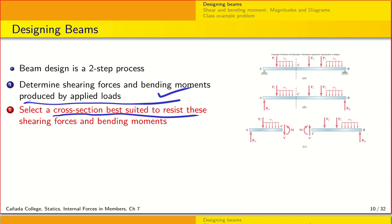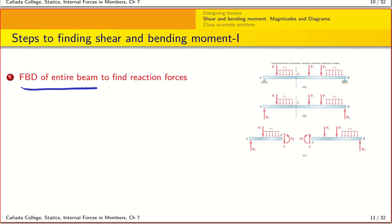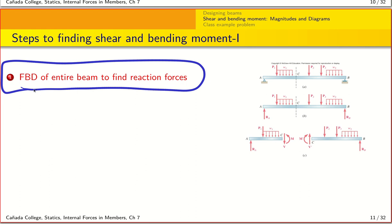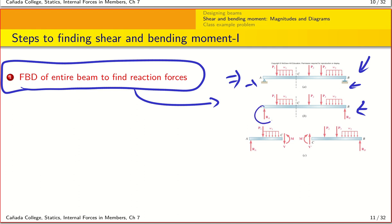To determine the shear forces and bending moments, the first step — which should be familiar — is to work with the free body diagram of the entire beam to find the reaction forces. As shown in this figure, we start with a given loading and support system. We free up the beam into a free body diagram, then calculate the values of the reaction forces at points A and B where the supports are located.